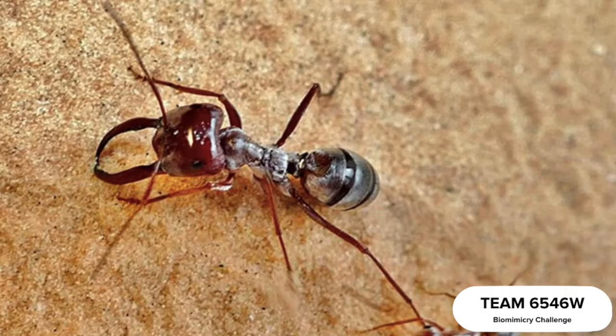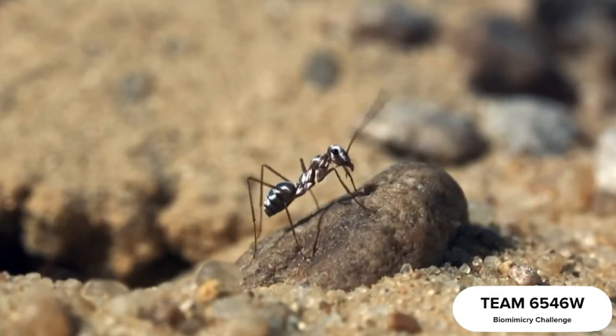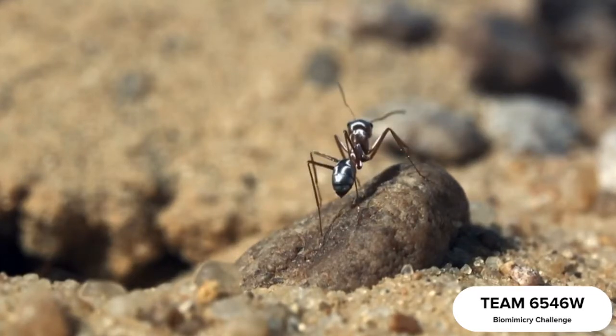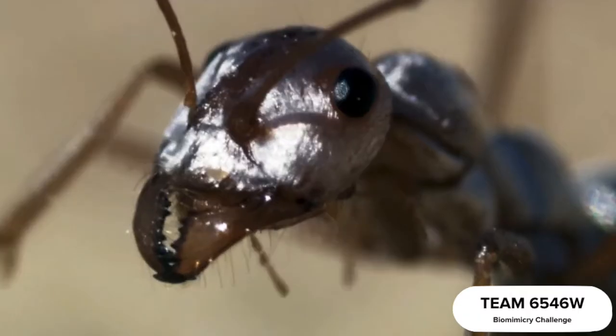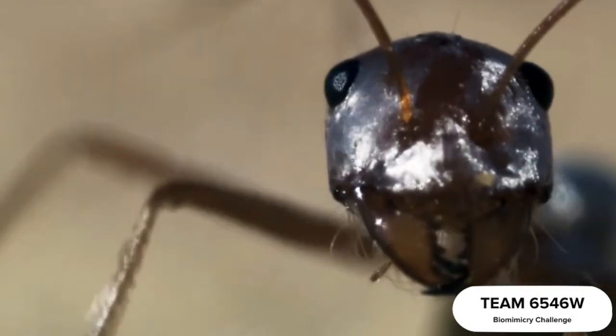An animal that stood out was the Saharan silver ant. Because of its unique ability to thrive outside while the temperatures in the Sahara desert are at their peak of nearly 60 degrees Celsius, we chose to emulate the aspects of their anatomy which allow for this to occur.